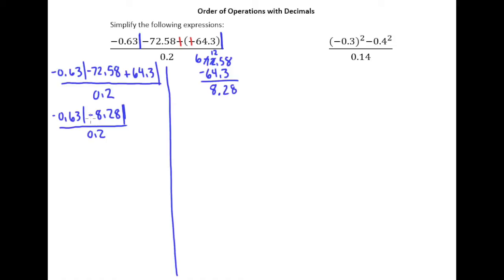And then in the next step, we can just take the absolute value. So this is negative 0.63 times the absolute value of negative 8.28 is 8.28. I put parentheses around the 8.28 simply to indicate that I'm multiplying negative 0.63 and 8.28. And that's the next step as well. So let's go ahead and do that. So we have 8.28 times, I know it's going to be negative because it's a negative times a positive. So I don't forget about it. Let me just do this. My next step will be negative something divided by 0.2.